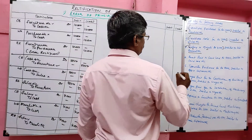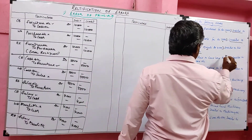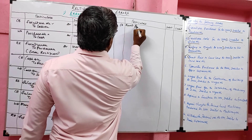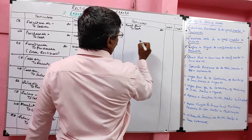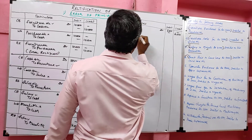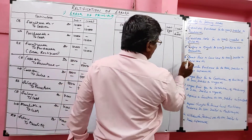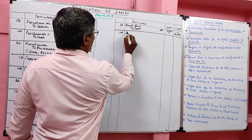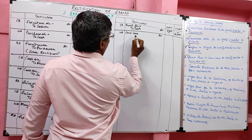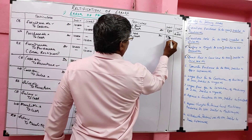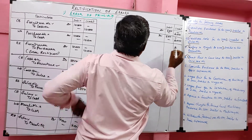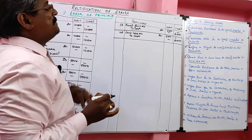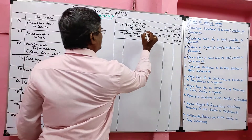Problem 4: Rent paid to landlord, rupees 6,000. Correct entry: rent paid account debit to cash, value 6,000. What they did: rent paid is a nominal account, landlord is a personal account. Instead of debiting nominal account, they gave debit to the personal account. This is an error of principle.